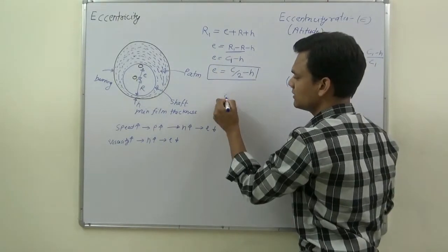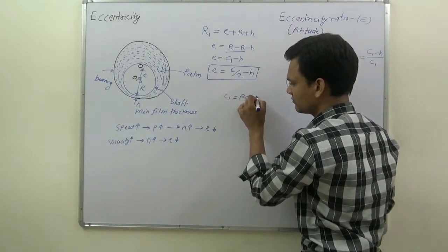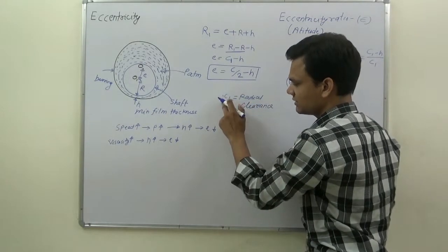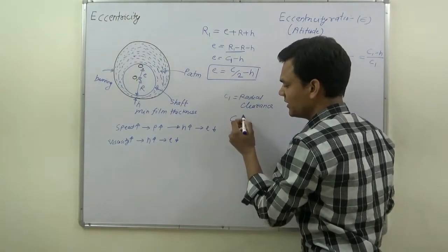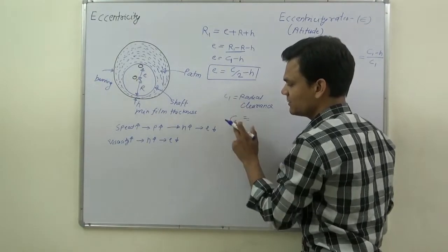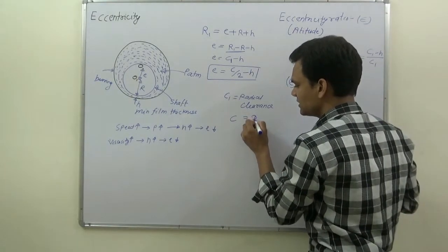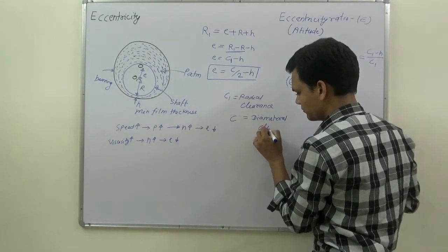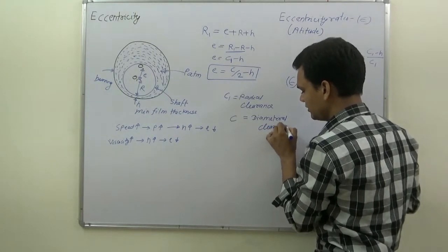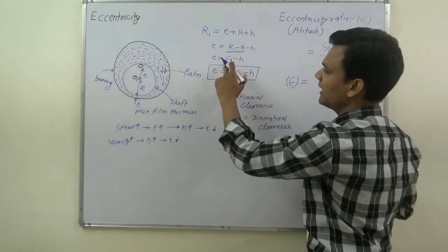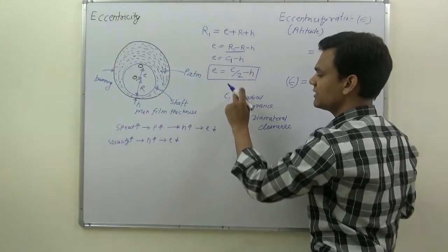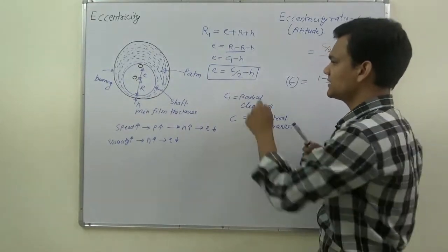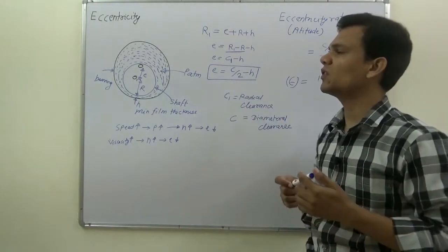If we want to write the radial clearance in terms of diametral clearance, then we can write C1 as C by 2, where C is diametral clearance. So we can write E equals C by 2 minus H. This is the formula for eccentricity.